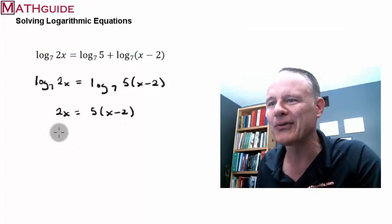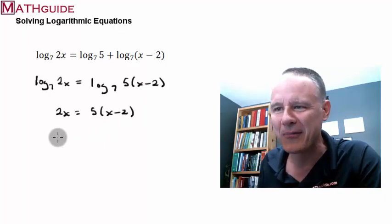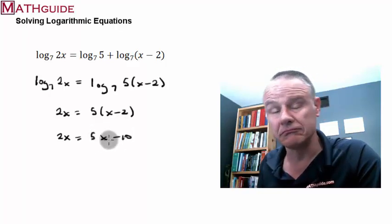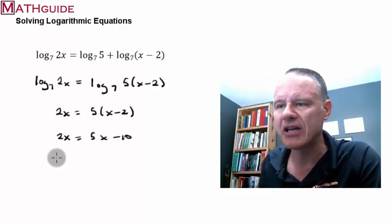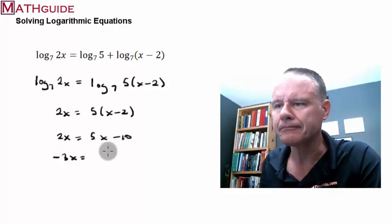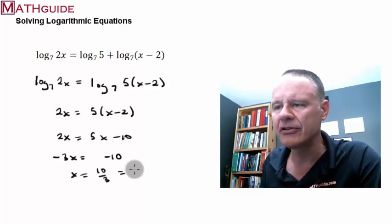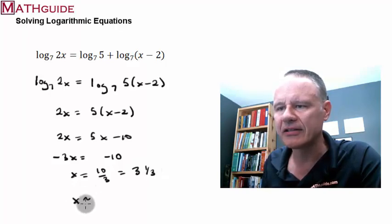If you were to solve this, let's do the distributive property on the right side. So you would get 2x = 5x minus 10. You could then subtract 5x from both sides. You could then divide both sides by negative 3. You could either leave it as 10 thirds, or 3 and 1 third. You could even divide this to get an approximate value of 3 and 1 third. And there's the answer.